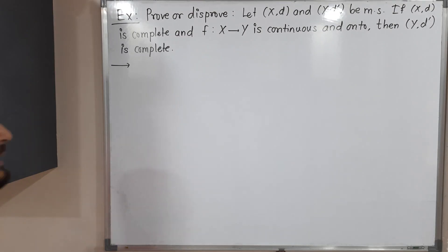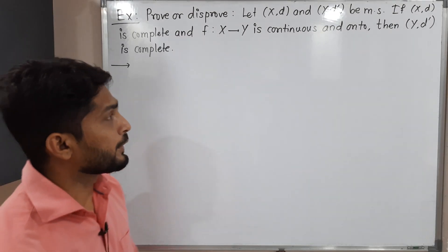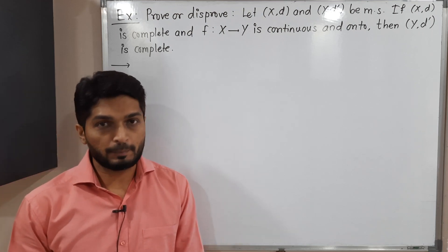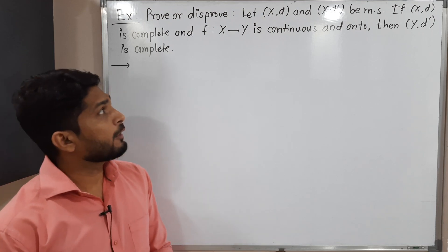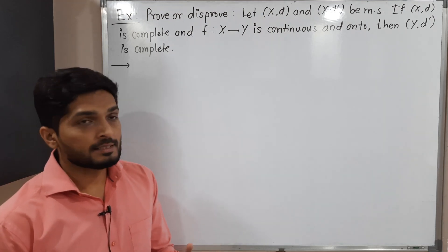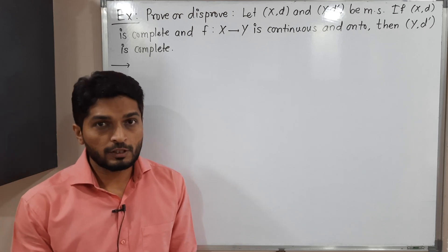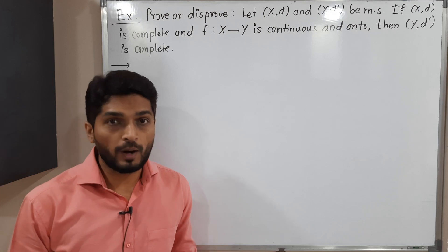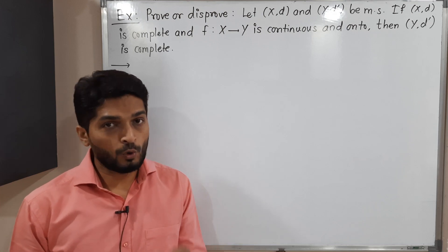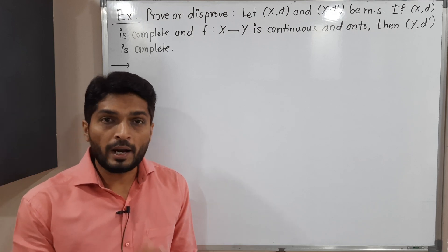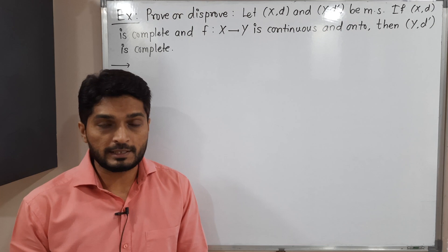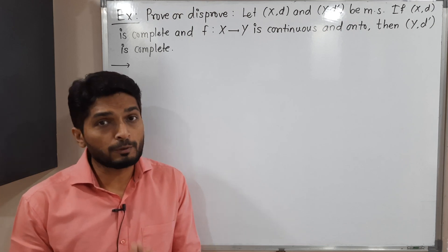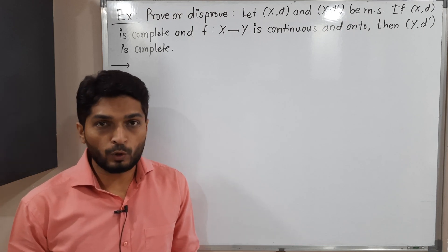Hi everyone. Let us discuss this example. We have to prove or disprove the given statement: given two metric spaces (X, d) and (Y, d'), if X is a complete metric space and f from X to Y is onto and continuous, then Y is also a complete metric space. Actually, this statement is not true, so we are going to disprove it.